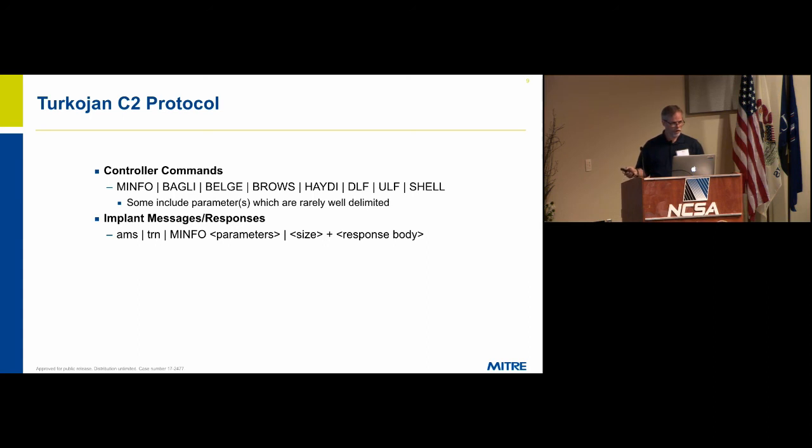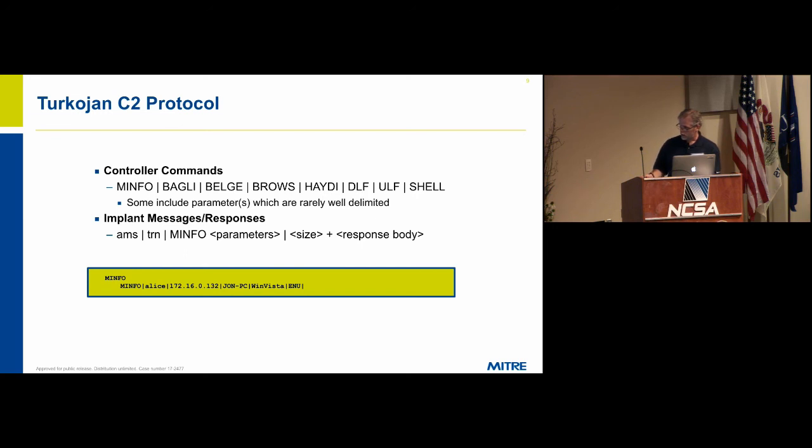The messages from the implant consist of a number of different things. The first time the implant fires up, it sends this AMS packet back to the controller. The controller sends an M-info command to the implant. It responds with M-info and some number of parameters. This is pretty common in a lot of C2 protocols. When the implant connects to the controller, it provides things like what username am I running under, what's my IP address, what operating system am I running.